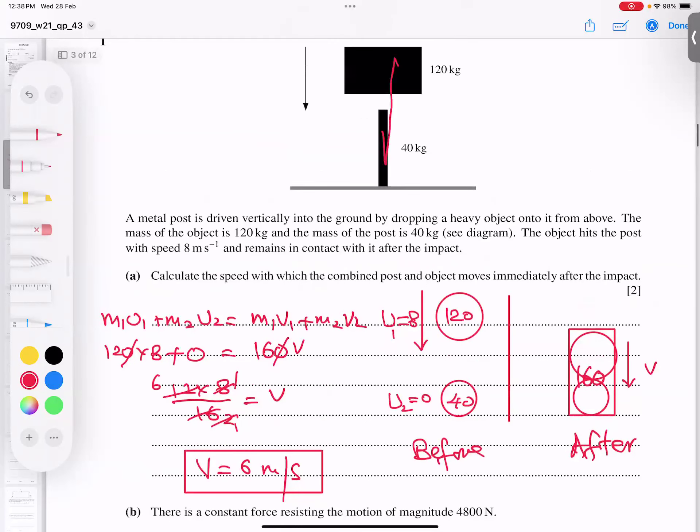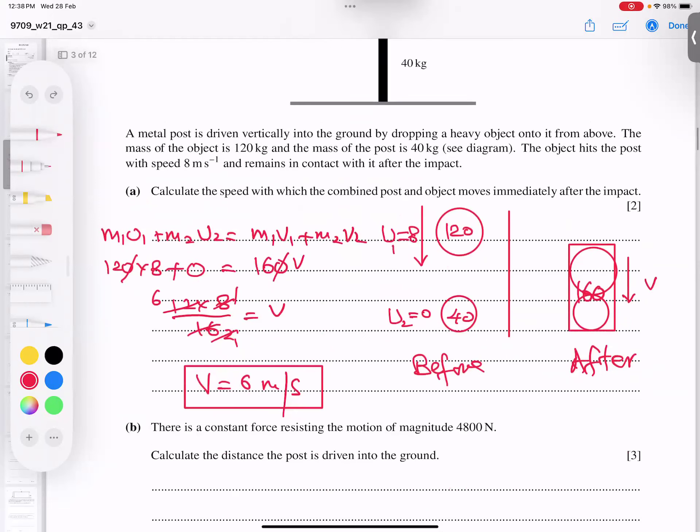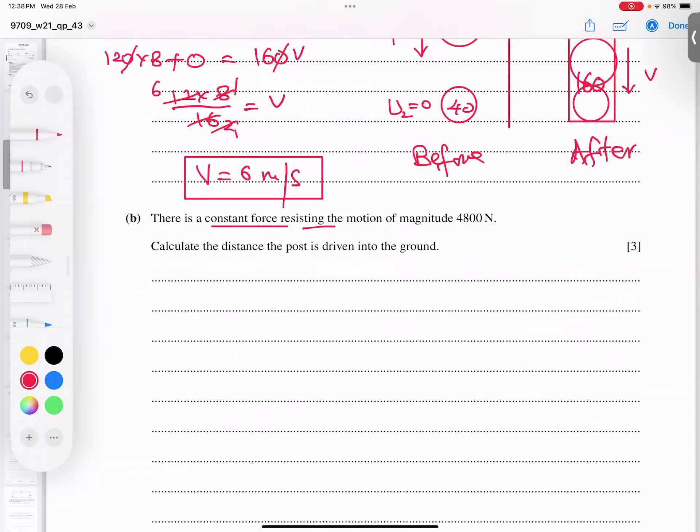It means the whole object will go in the ground with a speed of 6. When it will hit the post, both together will go inside with a speed of 6. Now, there is a constant force for the resistance of motion to a magnitude of 4800 newtons. When this whole mass will combinedly go inside the ground, naturally the starting speed will be 6 meter per second. This speed will become initial. And ultimately he said find the distance the post is driven into the ground. Final velocity will be 0 because ultimately it stops somewhere.